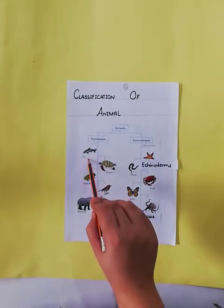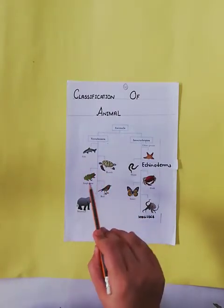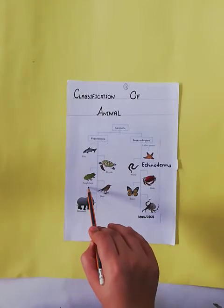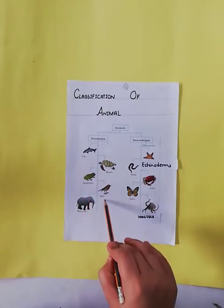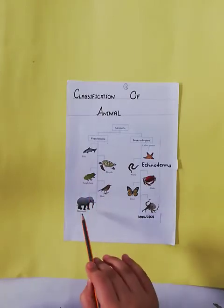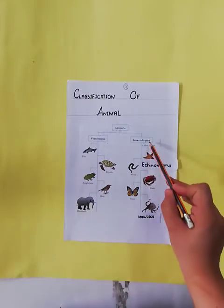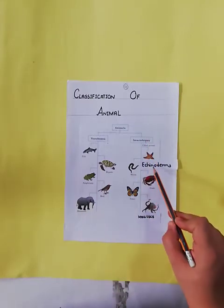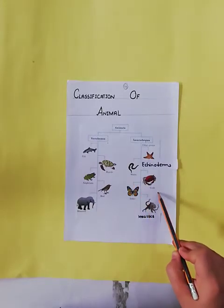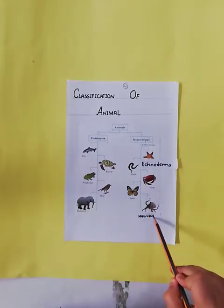Vertebrates are further classified into five groups: number one, Fish; number two, Reptile; number three, Amphibian; number four, Bird; number five, Mammal. Invertebrates are also further classified into five groups: Echinoderms, Worm, Crab, Insects, and Mollusks.